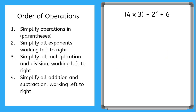Let's review the order of operations. When we have an expression, the first thing we do is simplify the operations within the parentheses. Next, we simplify the exponents, always working left to right. After that, we do all multiplication or division, then all the addition and subtraction, again working left to right.